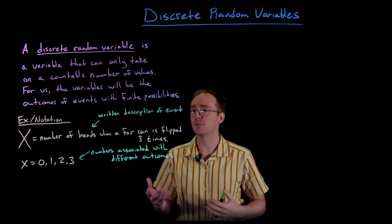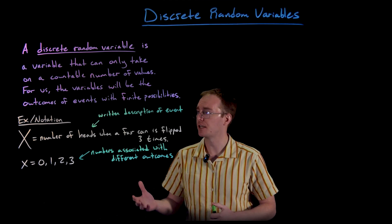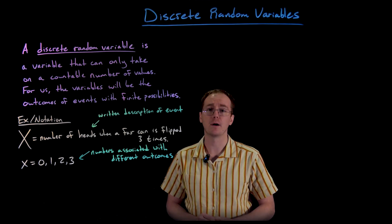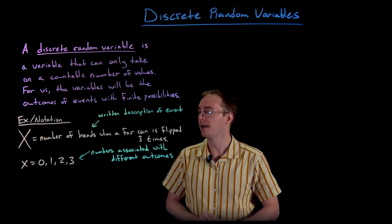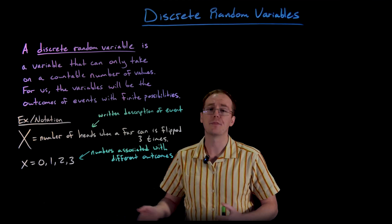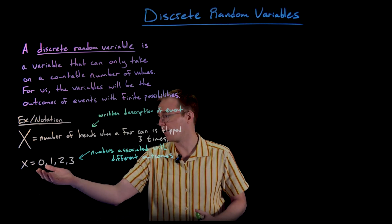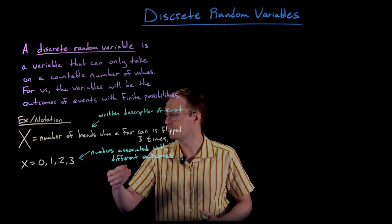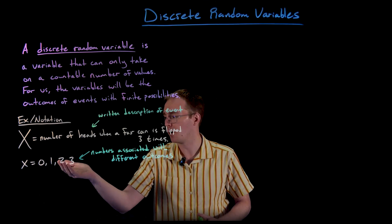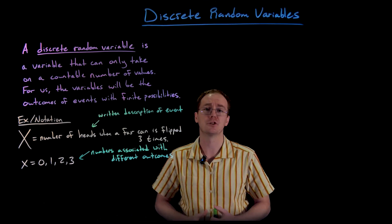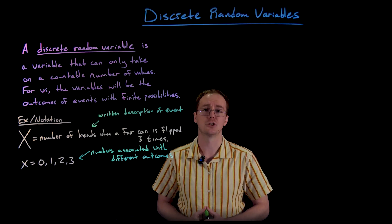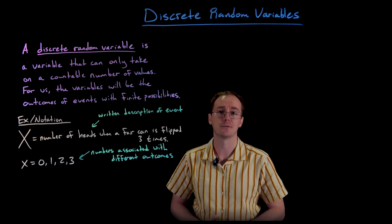Big X gives a written description of our event — in this case, the number of heads that turn up when a fair coin is flipped three times. Little x gives the values associated with the different outcomes: 0, 1, 2, or 3, because we could have no heads, one, two, or three heads. There's no way to have four or more heads when flipping the coin only three times.